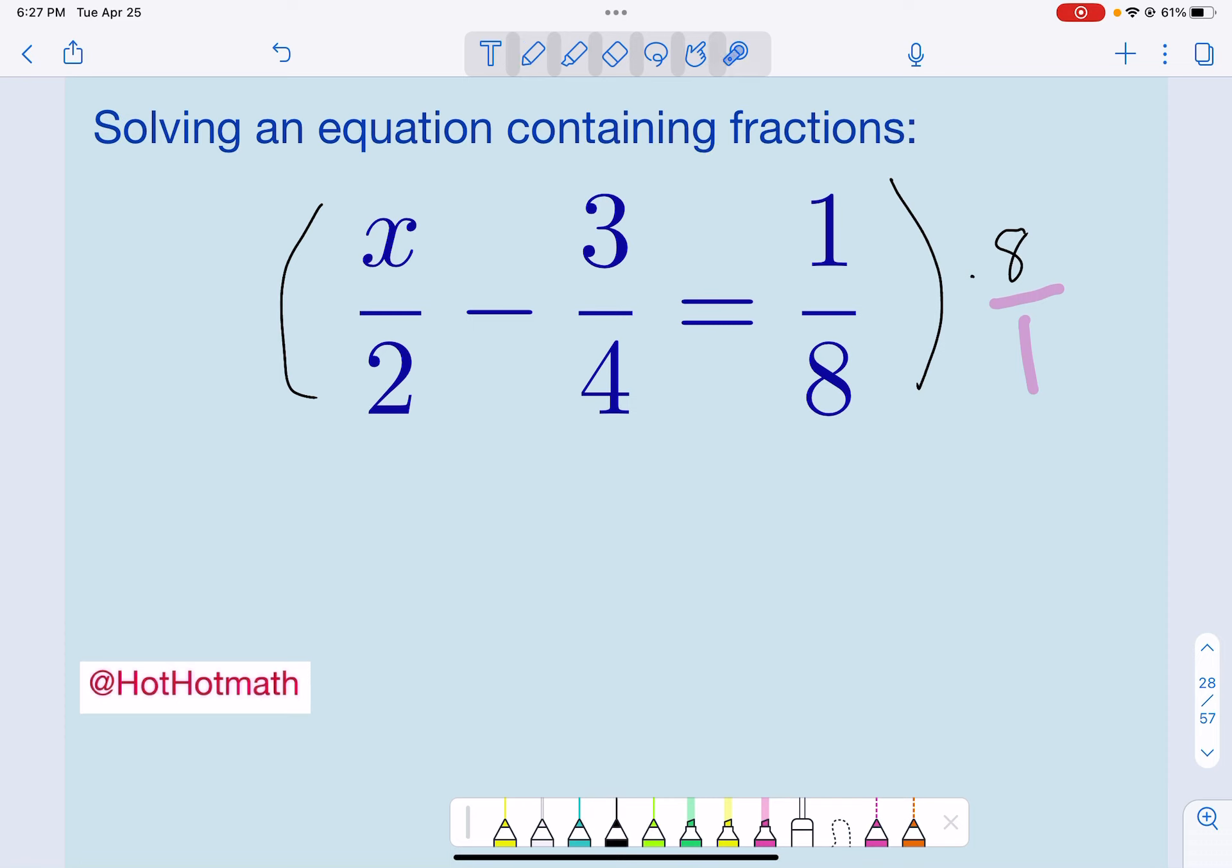So our first one here, we would get 8x over 2. Well, 8x divided by 2 is 4x.